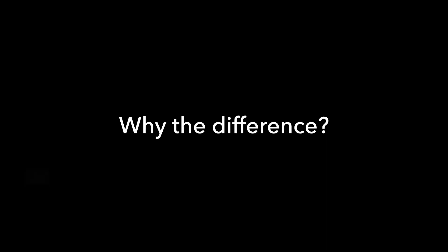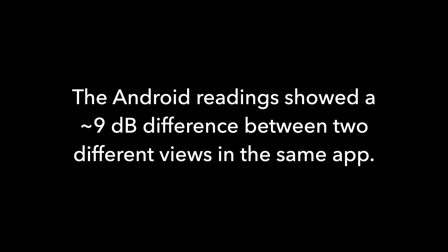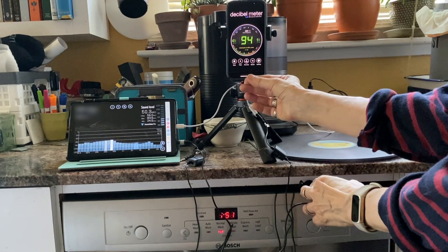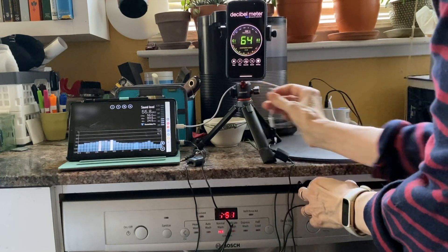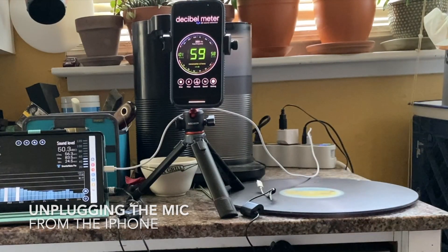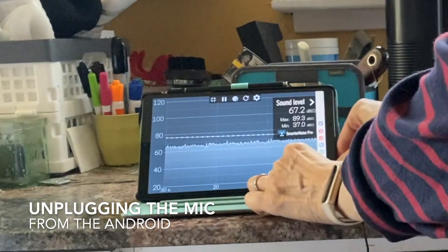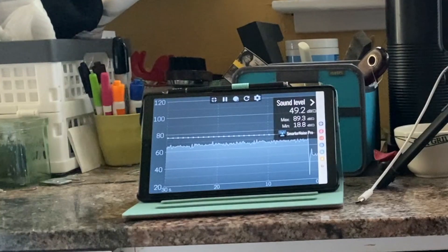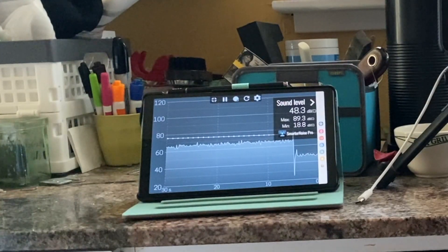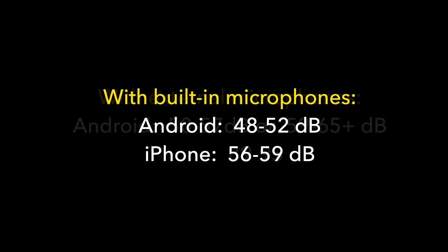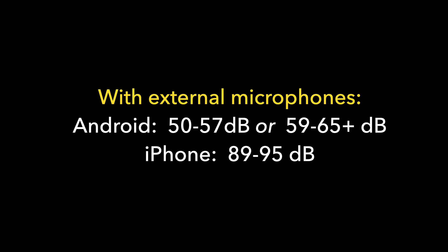The iPhone and Android had very different results with the same microphone. Then I unplugged the microphone from the iPhone to use the built-in microphone — this brought the reading down to about 56 to 59 decibels. Unplugging from the Android and using its built-in microphone showed 48 to 52 decibels. The discrepancy is still there, but not as dramatic. I personally think 60 decibels is more realistic than 48, since typical quiet room noise is 35 decibels and the dishwasher made plenty of noise.